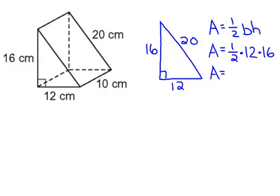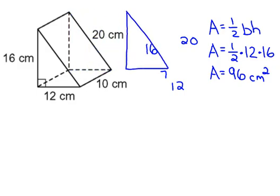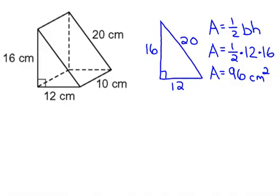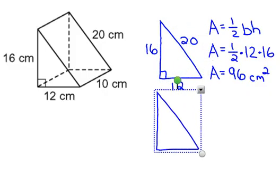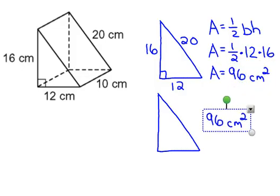And when you multiply that all out, you'll get an answer of 96 square centimeters. Now if you look at your figure, you have another identical copy of that triangle here. So that same triangle is repeated twice on this figure. So we have another identical one, and it also has an area of 96 square centimeters.